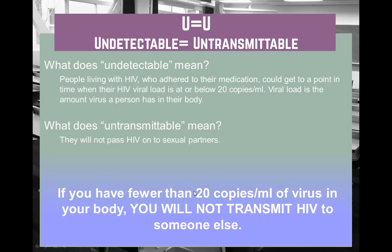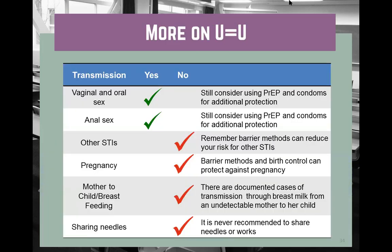This chart summarizes that same fact. U equals U works for vaginal sex, oral sex, and anal sex. PrEP and condoms can only further protect folks. However, being undetectable does not affect folks' ability to transmit STIs or prevent pregnancy. There's not yet evidence to show that transmission through breast milk is eliminated when mothers have been undetectable, nor for sharing needles — so those are important distinctions.